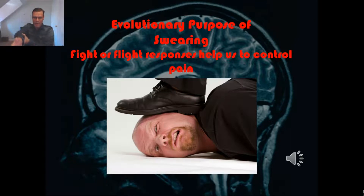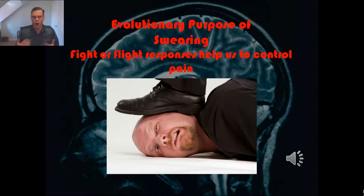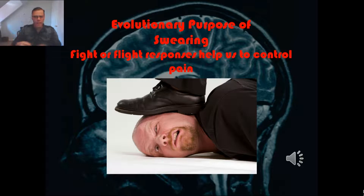The control group again put their arms in the ice water and this time were told to shout a word — specifically, words to describe a table, things like 'brown' or 'hard.' So you can imagine this person's got their hand in that ice water going, 'hard, hard, hard.' Not surprisingly, they couldn't actually keep their hands in the ice water any longer on that second try than on the first.